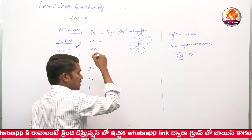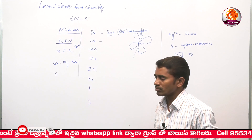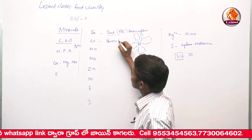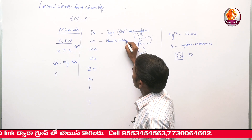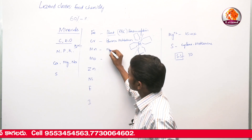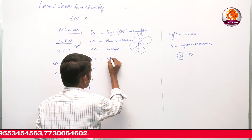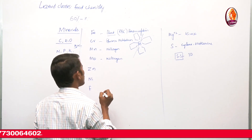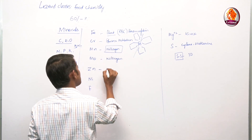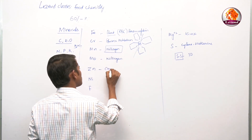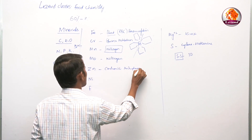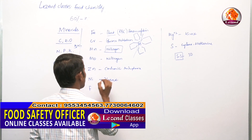Chromium is essential for glucose metabolism. Manganese is a cofactor for some enzymes. Molybdenum is essential for nitrogen fixation. Zinc is a cofactor for some enzymes like carbonic anhydrase. Nickel is a cofactor for some enzymes like urease.